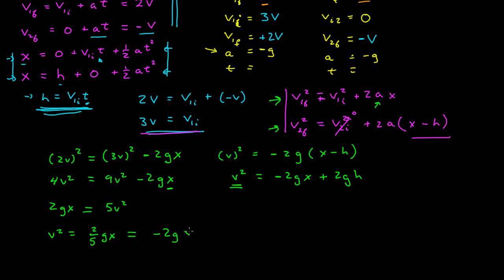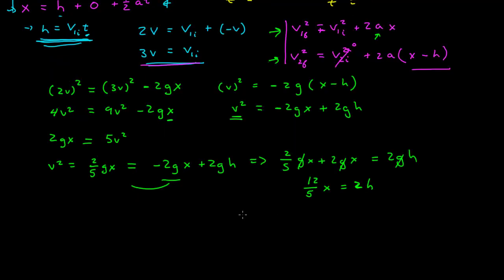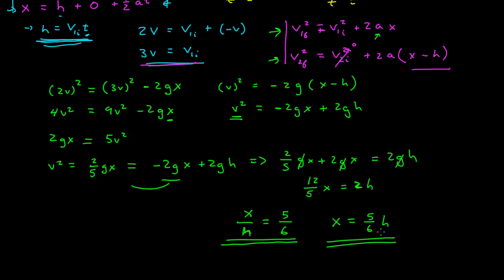Cross-multiplying gives x over h equals 5/6, or equivalently x equals (5/6)h. So the balls collide at a height that is five-sixths of the distance h from which the second ball was dropped. That's the answer.